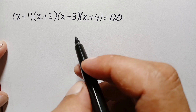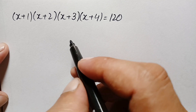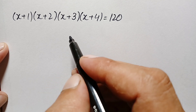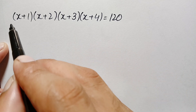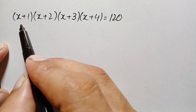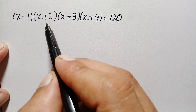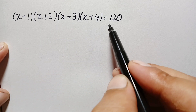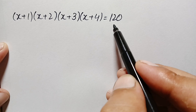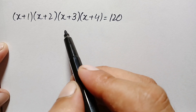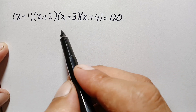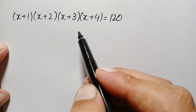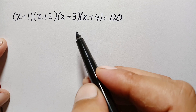Hello everyone, you are welcome. Today we have a new beautiful algebra math problem, which is (x+1)(x+2)(x+3)(x+4) = 120. We will try to find all the possible real and complex solutions of this algebra math problem.